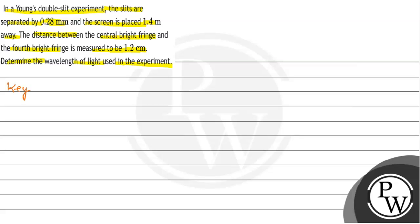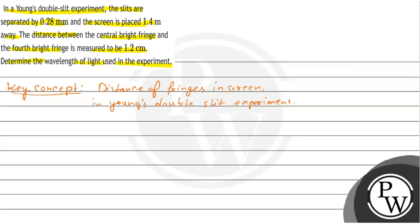This question is about our key concept — the distance of fringes on the screen in Young's double slit experiment. Young's double slit experiment: let's say this is our slits and this is our screen.